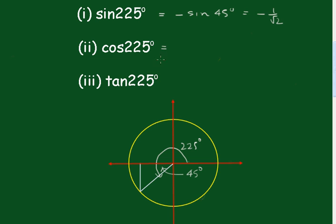Cosine of 225, the cosine is negative here, only the tangent is positive. So that's going to be minus the cosine of 45, which is minus 1 on root 2 also.